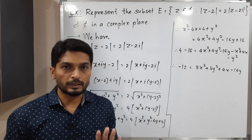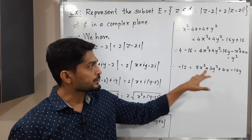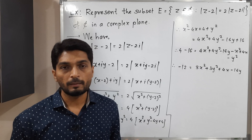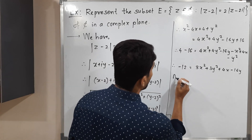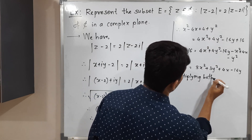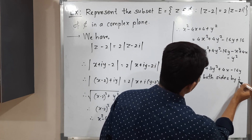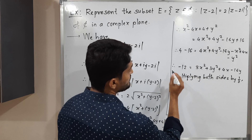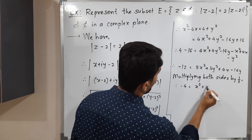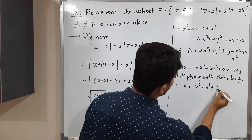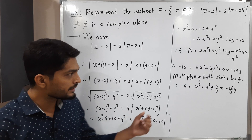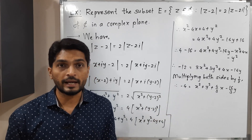Normally we try to keep the coefficient of X squared and Y squared equal to 1. Here the coefficient of X squared is 3 and of Y squared is also 3. So I will divide both sides by 3. Multiplying both sides by 1/3, we will have: minus 4 equals X squared plus Y squared plus 4/3 X minus 16/3 Y. This is actually the equation of a circle, but not in standard form.